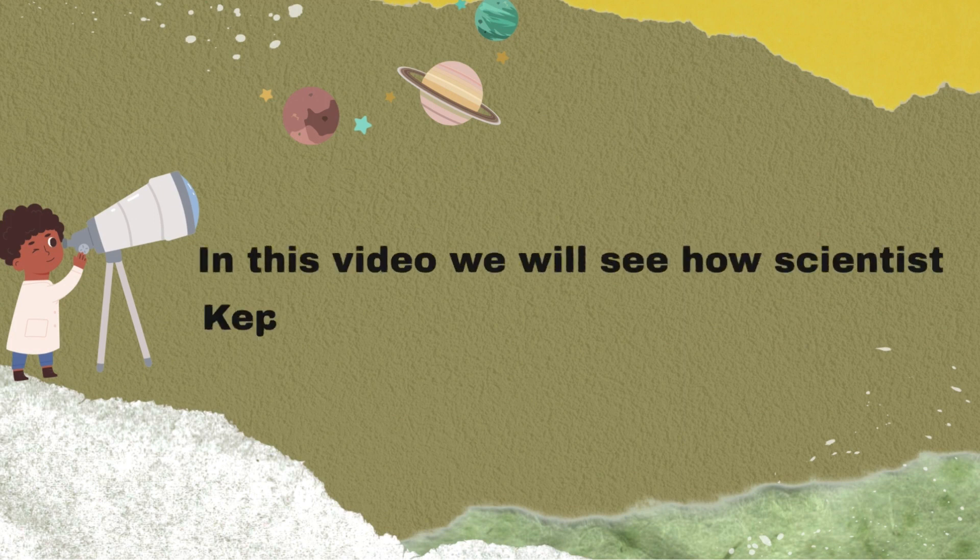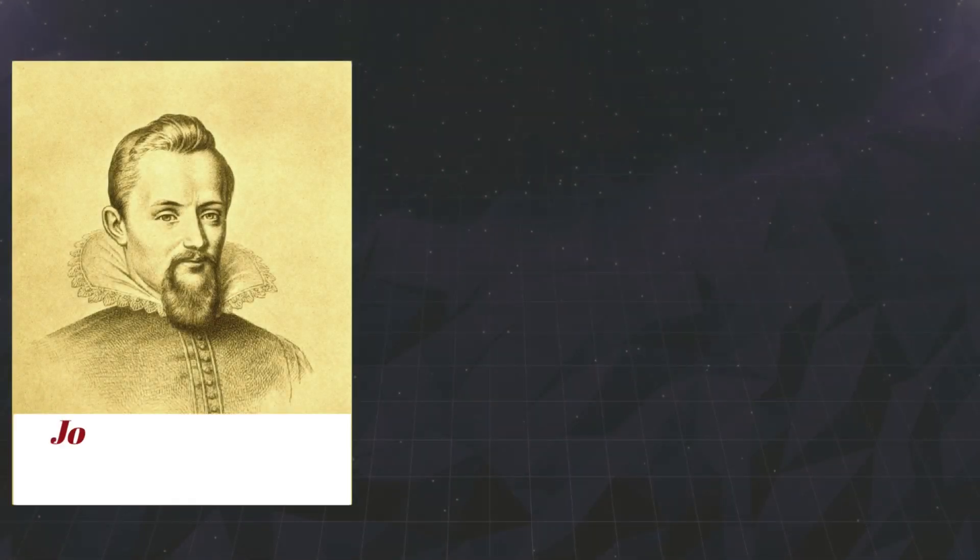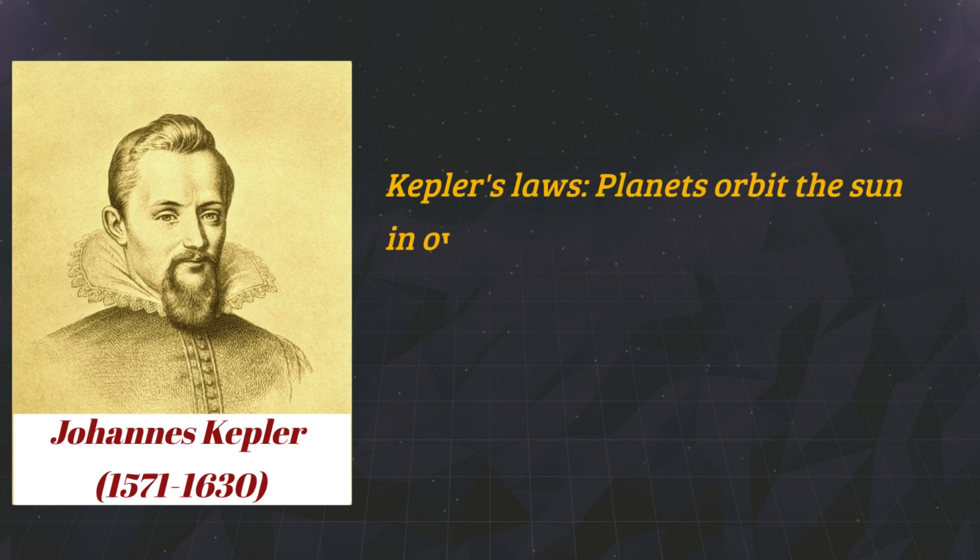we will see how scientists Kepler and Newton stated their laws. First, we will learn about Kepler's law. Kepler said that planets orbit the sun in oval paths, sweep equal areas in equal time, and their orbital period is related to their distance from the sun.